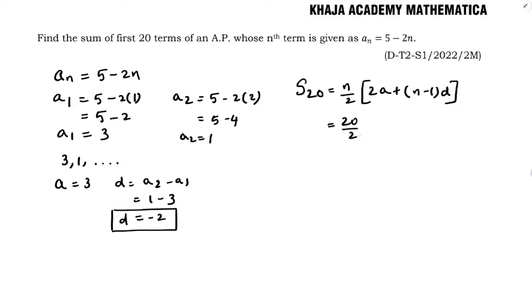So here 20 terms. So 20 by 2, 2 into 3 plus 20 minus 1 into minus 2.